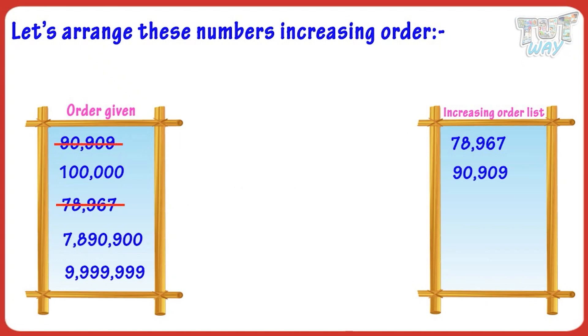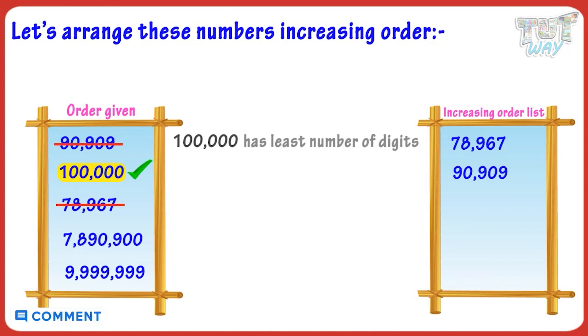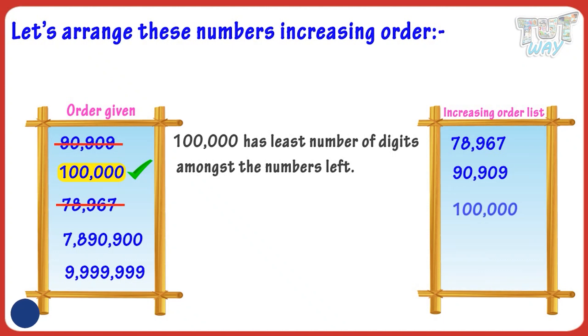Now 100,000 has the least number of digits among the numbers left, so place it next and cross it from the list.